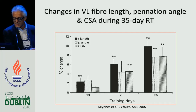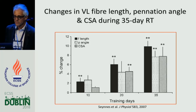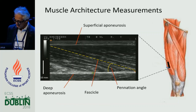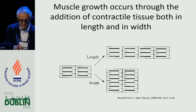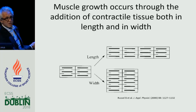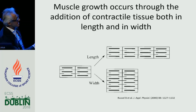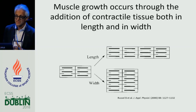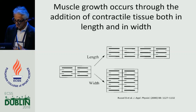Pennation angle also increased. This introduced a new concept: when we think of muscle hypertrophy, we have to think about how sarcomeres are added — in series or in parallel. In both cases the increase in muscle volume is identical. What our data suggests is that with this type of training, the addition of sarcomeres in series is faster than the addition of sarcomeres in parallel, as reflected by an increase in pennation angle. The addition of sarcomeres in series is reflected by an increase in fascicle length.